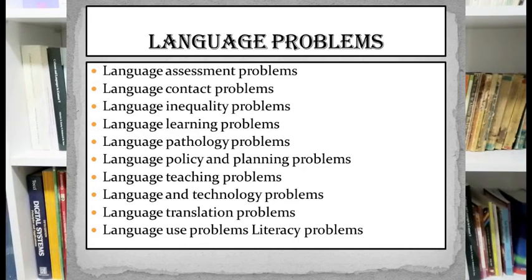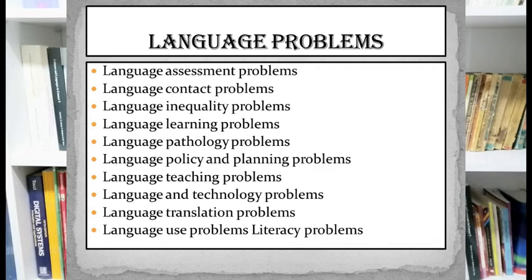The interdisciplinary view, however, sees that in addition to the aforementioned problems, applied linguistics should concern itself with the study of any real-world problems involving language, even if these problems require collaborating with experts from other fields outside linguistics. Thus, applied linguistics should deal with problems that cannot be solved with linguistic knowledge alone, but call for external assistance from other disciplines. Examples of these problems include language assessment, language contact, language inequality, language learning, language pathology, language policy and planning, language teaching, language and technology, language translation, language use, and literacy problems.